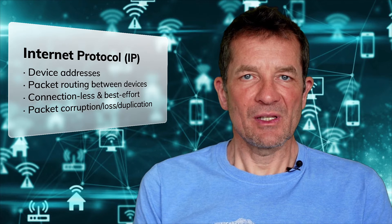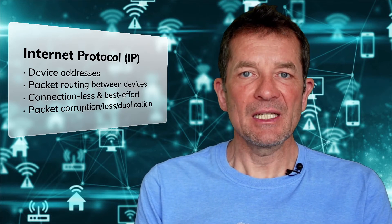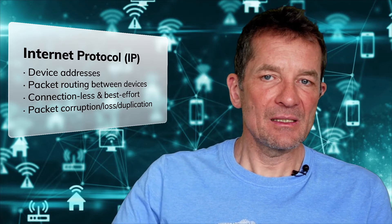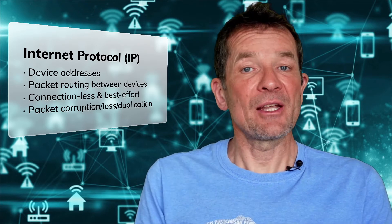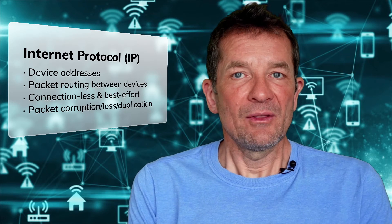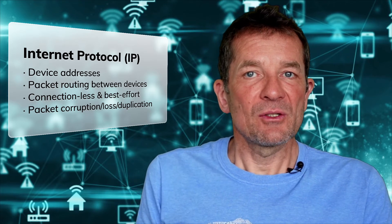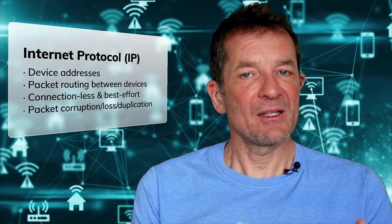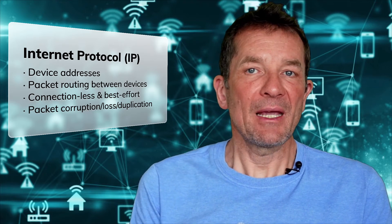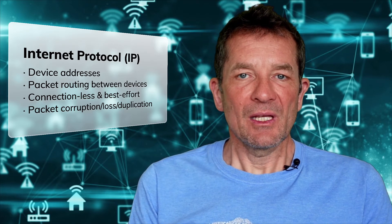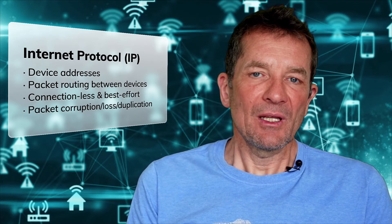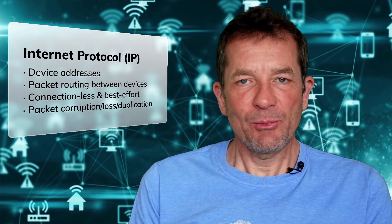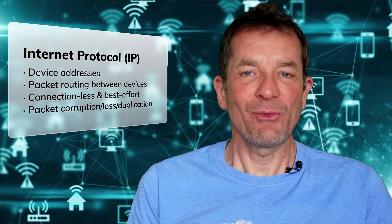The Internet Protocol establishes this addressing and also has mechanisms to allow routing of data packets between devices, so that one device that knows the address of another can send a data packet and the internet will make sure it gets delivered to the receiver. All data gets chopped up into little packets that are individually delivered. This is a connectionless and best-effort service, meaning packets can get dropped, get out of order, or even get duplicated. The internet at that point just says that happens — you can see packet loss, duplication, and packet corruption.